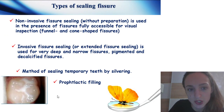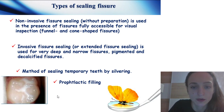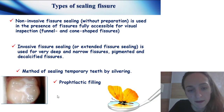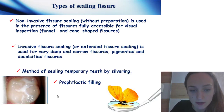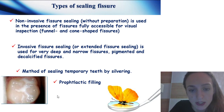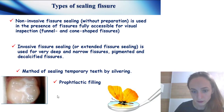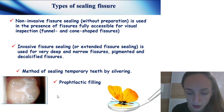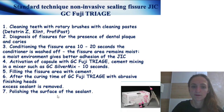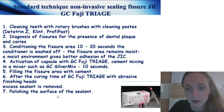Types of sealing: non-invasive — used in the presence of open, accessible fissures visible for inspection, when we have funnel and cone-shaped fissures. Invisible fissure ceiling: for extended fissure sealing, use for very deep and narrow fissures, pigmented and decalcified fissures. Methods of sealing temporary teeth: by silvering and preventive filling. Standard technique: non-invasive sealing fissure.